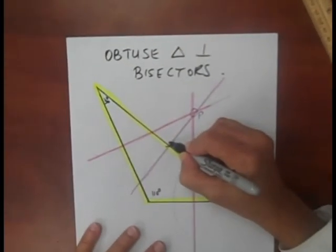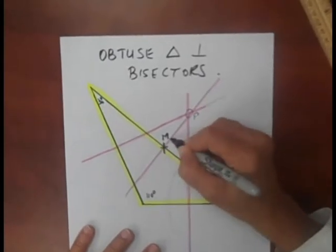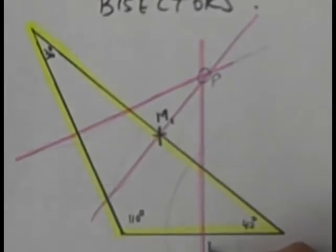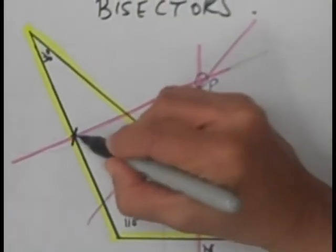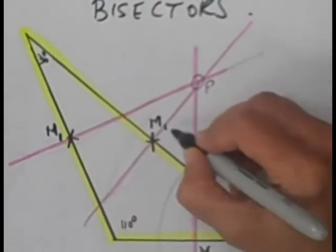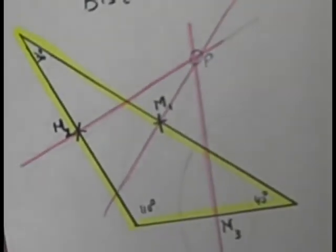I'm going to mark the midpoints of each side with a cross. I'm going to call them 1, 2, and 3. So I have three midpoints.